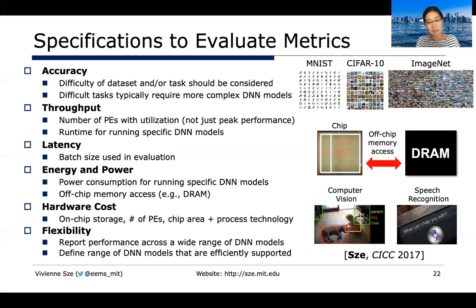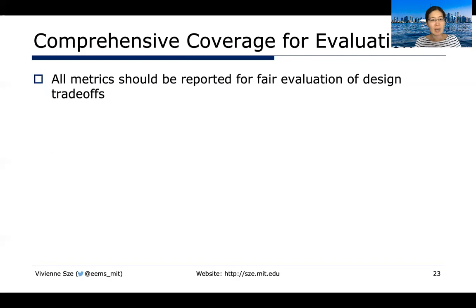Hardware costs to report include how much on-chip storage is assumed, number of processing elements, chip area, and process technology — it's not fair to compare a huge chip with a very small chip or chips using different transistors or process technology. For flexibility, ideally report performance across a wide range of DNN models. MLPerf is becoming a well-known benchmark providing a variety of models to report on. It's fine to not support all possible DNNs, but the limits of the hardware itself should be clearly stated.